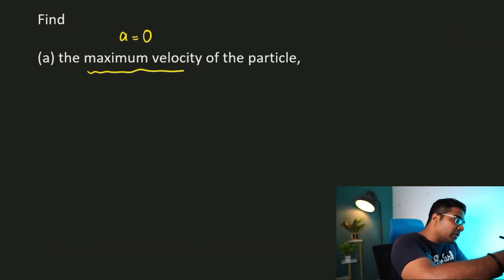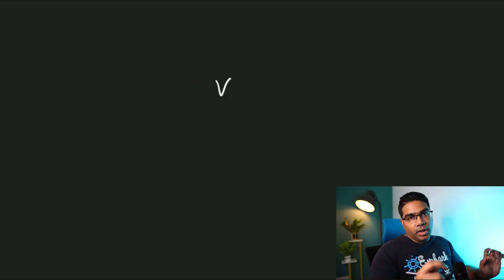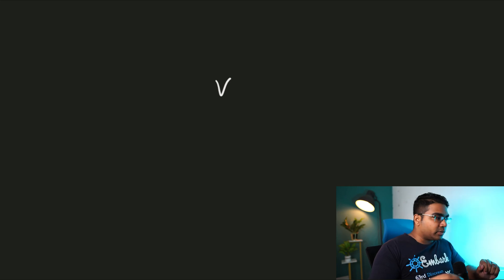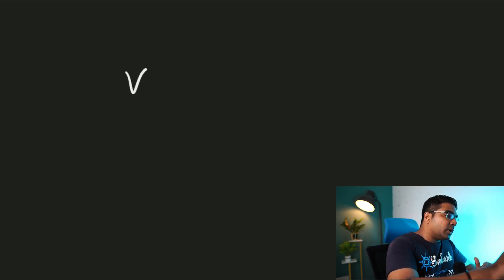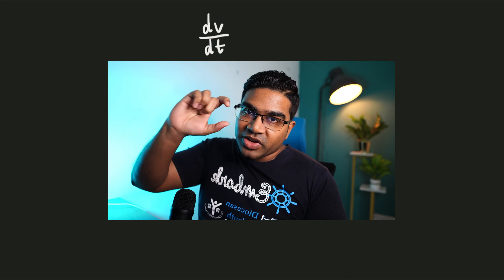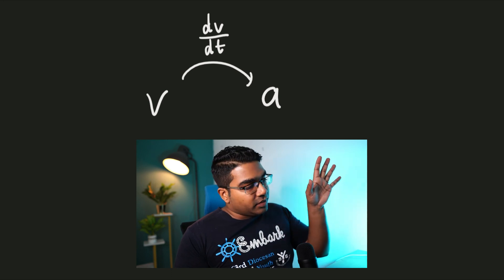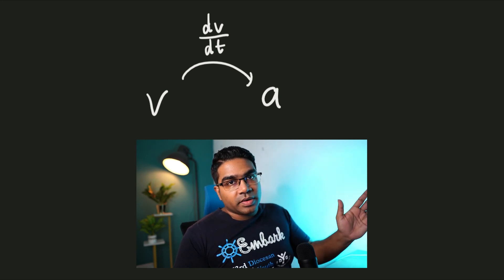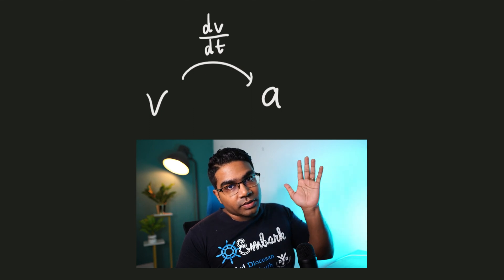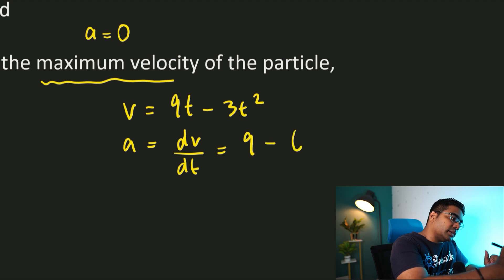However, the question has only given us velocity as a function of time: v = 9t minus 3t squared. How do we obtain acceleration from this? When you differentiate velocity with respect to time, dv/dt, that gives you acceleration. So when we are given a velocity function, all we have to do is differentiate with respect to t. So acceleration equals dv/dt, and differentiating v gives us a = 9 minus 6t.